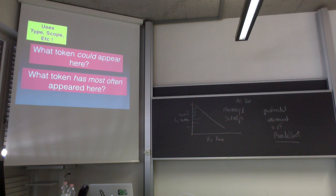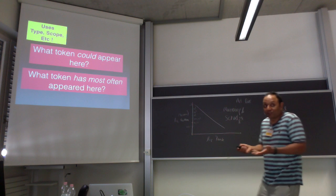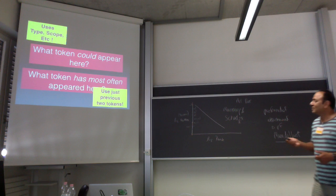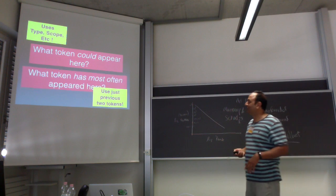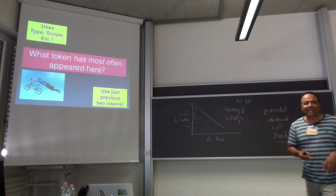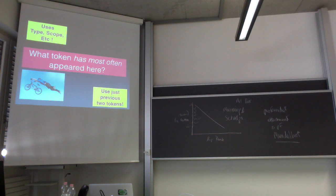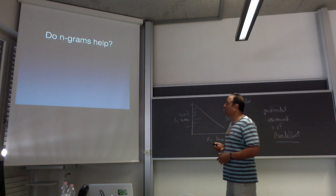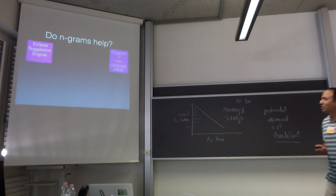So it just asks: what token is most likely to appear here? That's both a disadvantage and an advantage — in some cases, like after an open curly brace, there's no type information anyway, it's just frequency. But if you don't know the types, you're missing certain information. So we're asking: can we combine these two things to provide a more effective suggestion system? Do n-grams help in these code suggestion contexts?